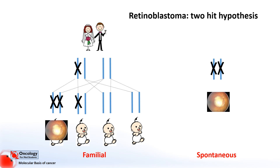Interestingly, the retinoblastoma gene is mutated in many cancers, which makes sense as it is an important regulator of the cell cycle. When people inherit a mutated copy, every cell in the body — not just retinal cells — is affected and at risk of developing into tumours. The reason why the gene was named after retinoblastoma is that in these inherited forms, the first tumours that develop are retinoblastomas. Given more time, they would develop other kinds of tumours.